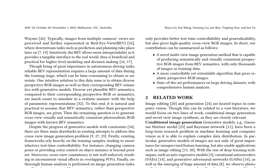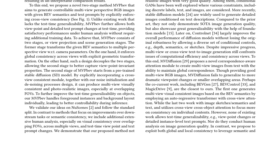The method consists of two stages: view projection and scene generation. The former stage transforms the given BEV semantics to multiple perspective views with respect to camera parameters, enforcing global consistency across views with explicit geometric transformation. The second stage starts with a pre-trained stable diffusion model and incorporates a cross-view consistent module, noise initialization, and denoising processes to produce multi-view visually consistent and photorealistic images, especially at overlapping fields of view.